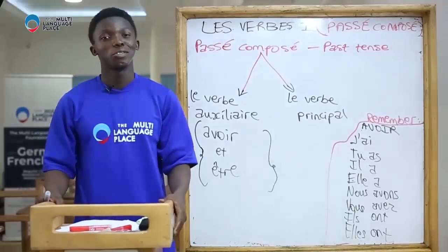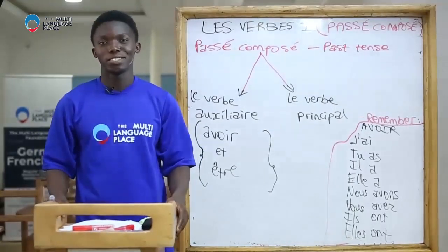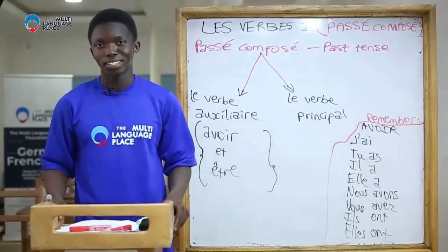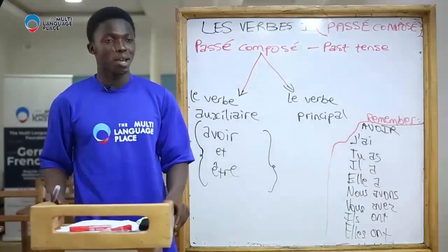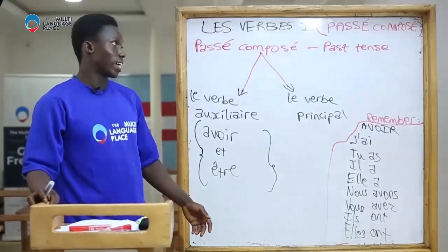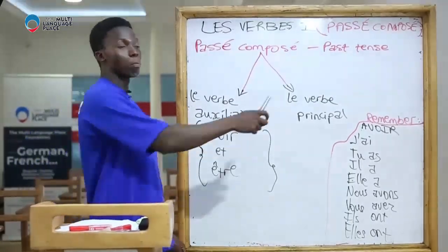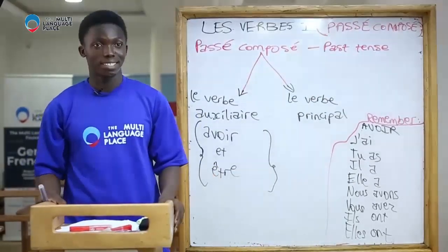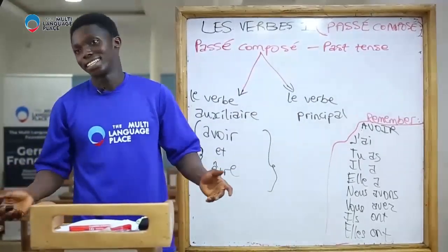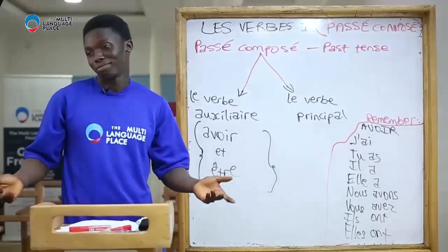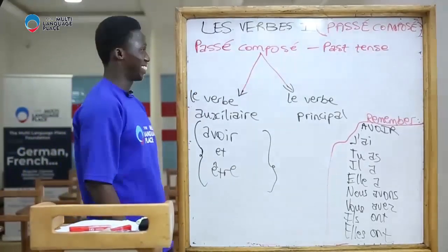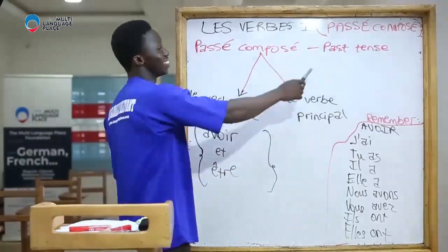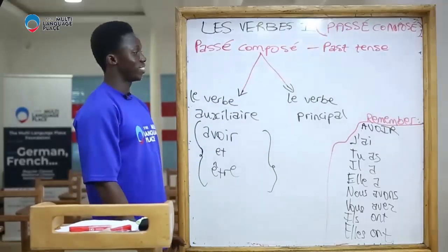Bonjour, bienvenue à Language Place. Aujourd'hui on va voir comment conjuguer les verbes au passé composé. Passé composé can be compared to past tense in English. I'm sure you all know past tense in English: I ate, I danced, I stole. Passé composé is past tense in English.